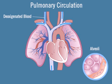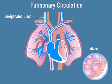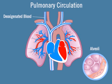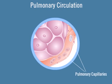Deoxygenated blood returning from the body tissues enters the pulmonary circulation as it is pumped from the right side of the heart into the large pulmonary trunk. The pulmonary trunk splits into the left and right pulmonary arteries. The left pulmonary artery enters the left lung and the right pulmonary artery enters the right lung. Pulmonary arteries continue branching until they form pulmonary capillaries that surround and cling to the alveoli.